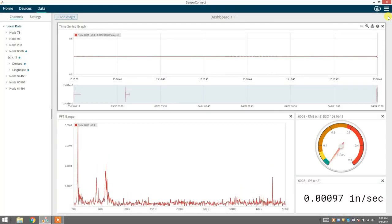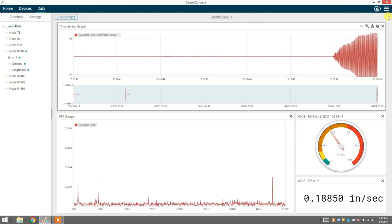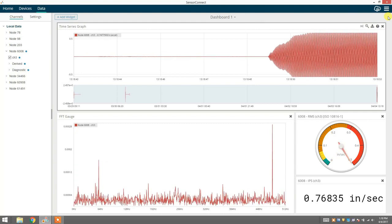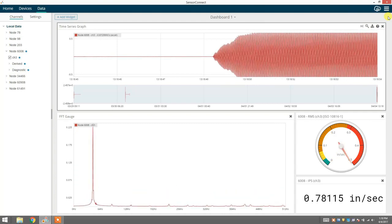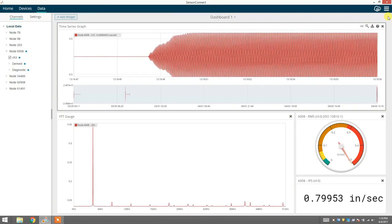Track vibration over time using derived channel outputs including acceleration RMS, acceleration peak-to-peak, velocity RMS, and crest factor.